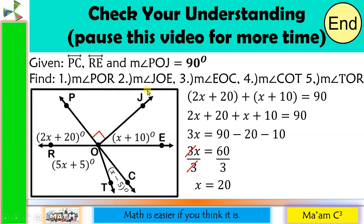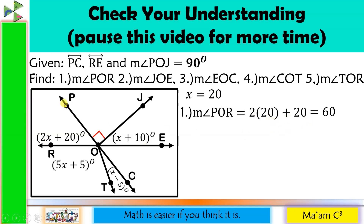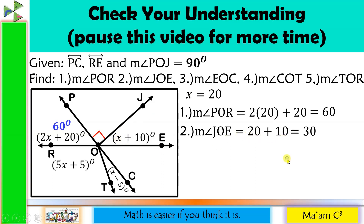Now that we have X equals 20, we can solve for each angle. Angle POR: substituting 20 gives 2 times 20 plus 20, which is 40 plus 20 equals 60 degrees. Angle JOE: substituting 20 gives 20 plus 10 equals 30 degrees. Notice: 60 and 30 are not congruent, so do not assume angle measurements from the picture — always solve for the variable.